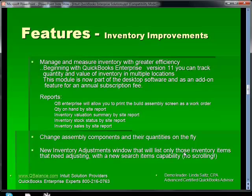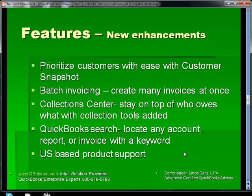Also in version 11, the inventory adjustments window now allows you to select just those items you're adjusting. So if you were to open up that adjustment again in the future, you could see without scrolling through thousands of items what was changed. Version 11 also has a terrific new customer snapshot that lets you prioritize your customers — you'll be able to see who's selling the most and who's paying the fastest, so you can concentrate your efforts accordingly. It allows you to do batch invoicing, creating many invoices at once. In the collection center, you can stay on top of who owes you what. The Google search we're all so used to is now included inside of QuickBooks, making it more efficient to use.